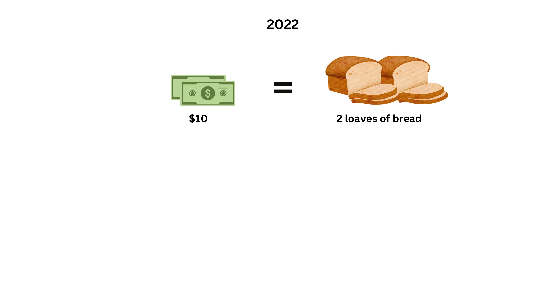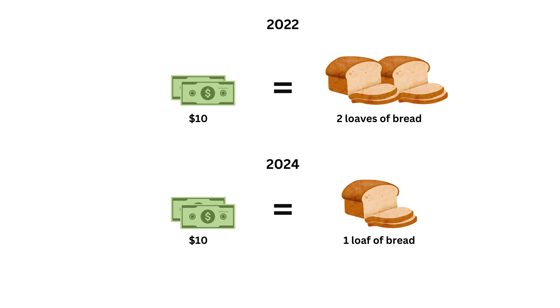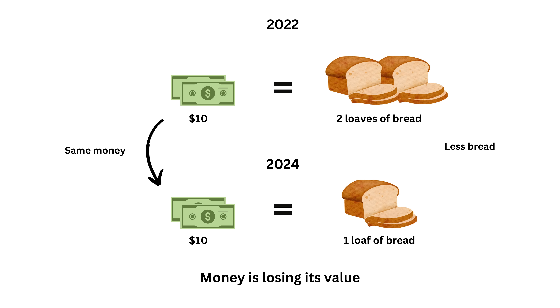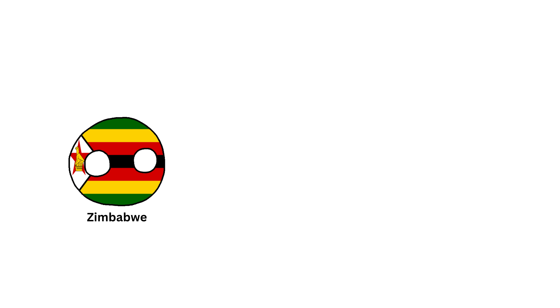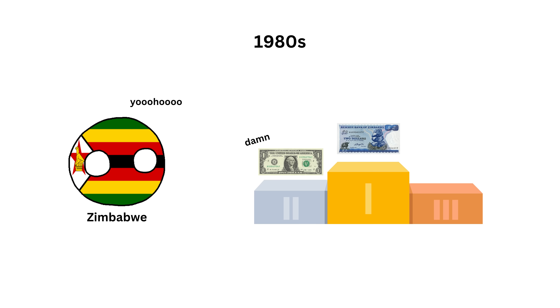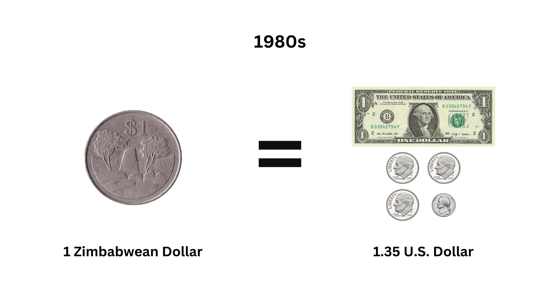For example, in 2022, you can buy two loaves of bread for $10. But due to high inflation, two years later in 2024, you can just buy a loaf of bread for $10. So you buy fewer things with the same amount of money. A real-life example is Zimbabwe. In the 1980s, the Zimbabwean dollar was worth more than the U.S. dollar — one Zimbabwean dollar was equal to 1.35 U.S. dollars.